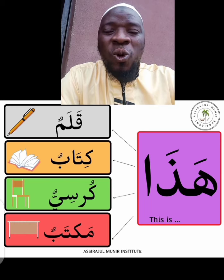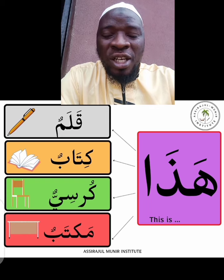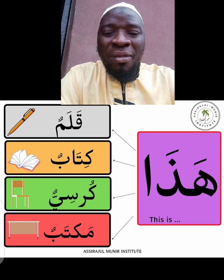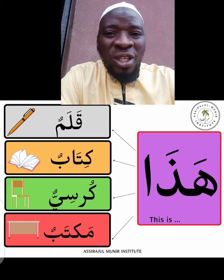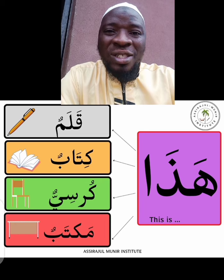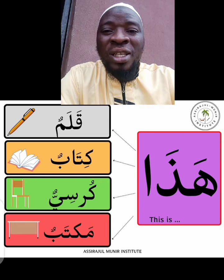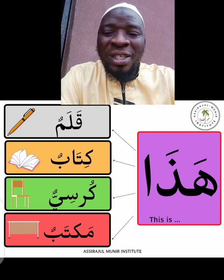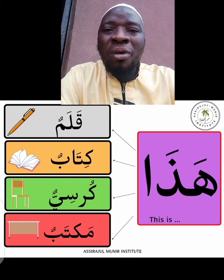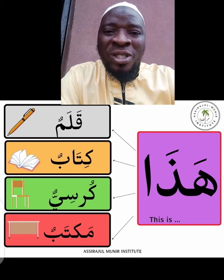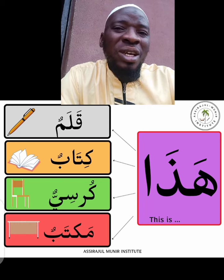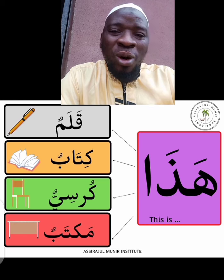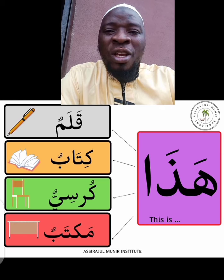Hadha korosijun — this is a chair. Hadha maktabun — this is a table. So the first one, hadha, is the mobtada, that is the subject, while kolam and the likes are the khabarun, which means the predicate — telling us about the subject of the sentence which is hadha.